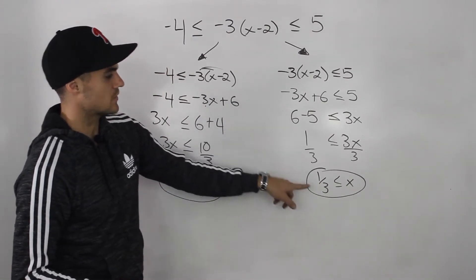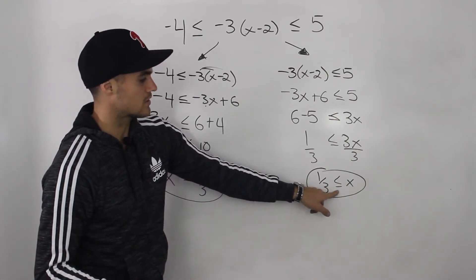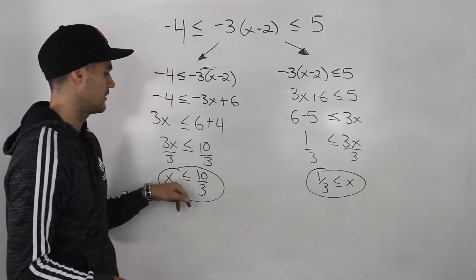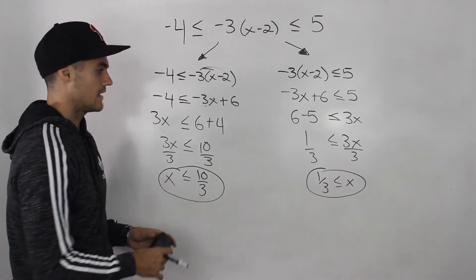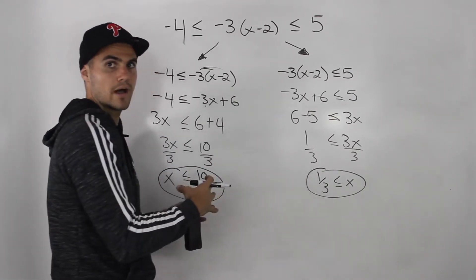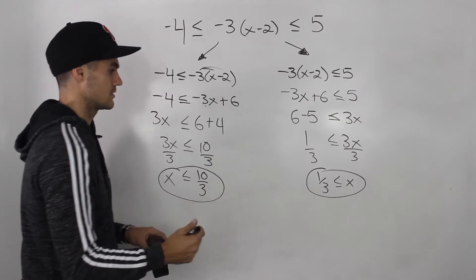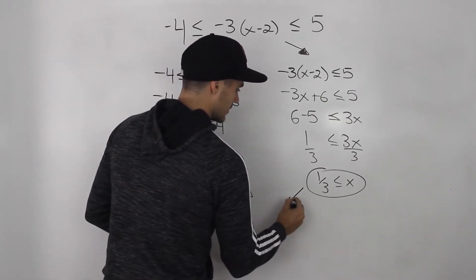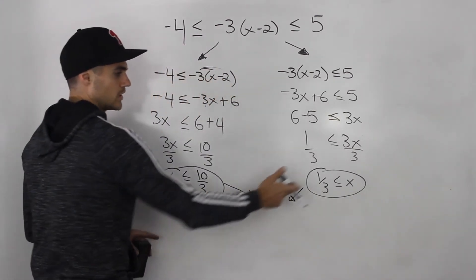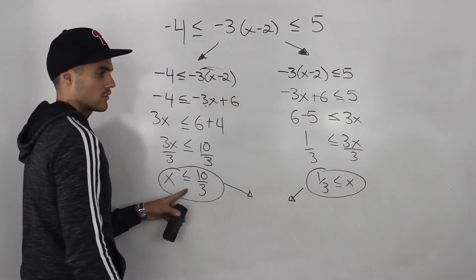So the solution to this is x has to be greater than or equal to 1 over 3. And here x has to be less than or equal to 10 over 3. And notice how these two can combine to make one solution. We can combine these values by saying x has to be between 1 over 3 and 10 over 3.